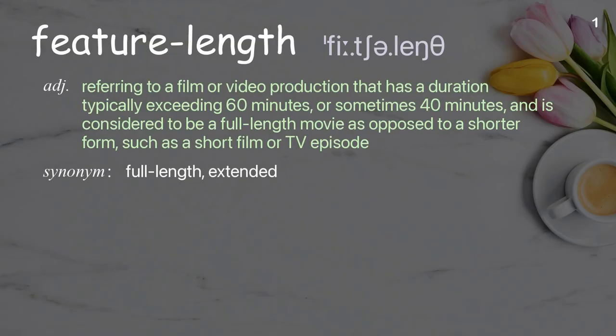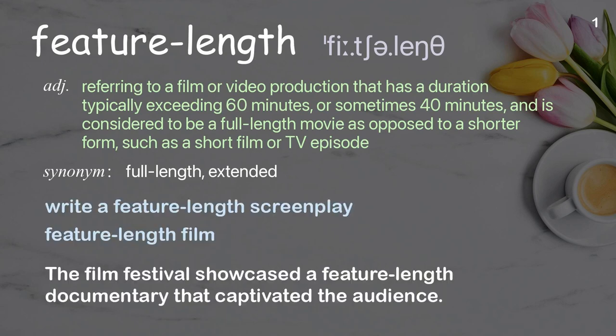Feature Length: Referring to a film or video production that has a duration typically exceeding 60 minutes, or sometimes 40 minutes, and is considered to be a full-length movie as opposed to a shorter form, such as a short film or TV episode. Examples: Write a feature-length screenplay. Feature-length film. The film festival showcased a feature-length documentary that captivated the audience.